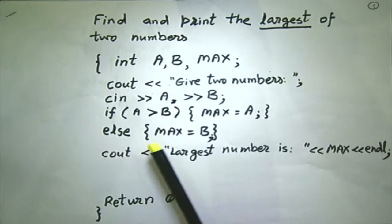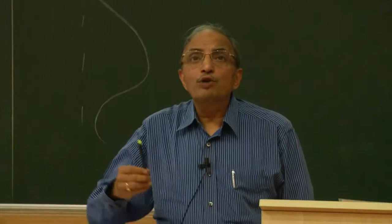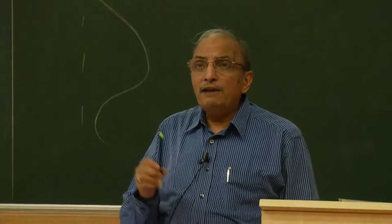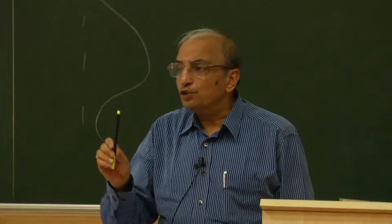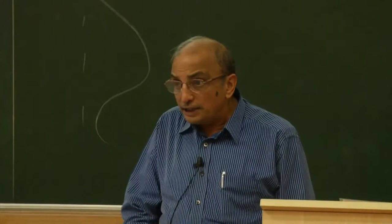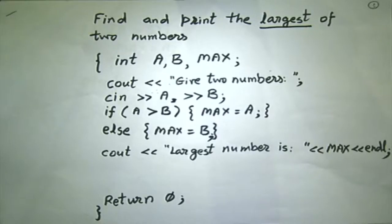What will happen if both numbers are the same? Anyone can go to max in such a situation — that is the correct answer. But in this particular logic implemented, if a is greater than b, it will not be true if a is equal to b. Therefore the if-statement will not be executed, and the else statement will be executed instead.